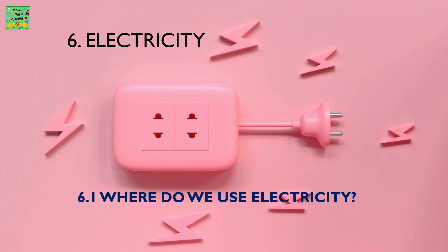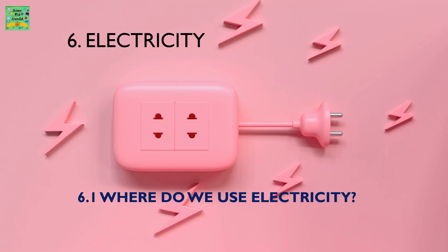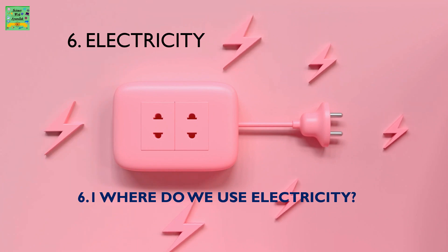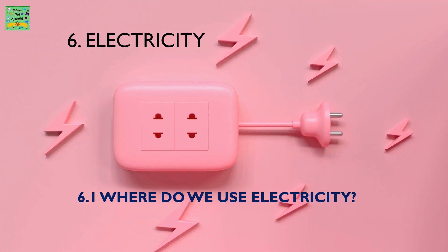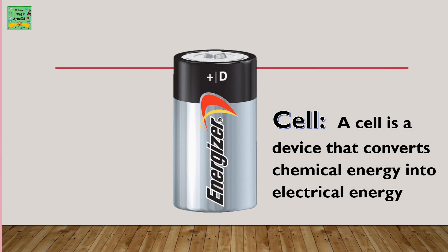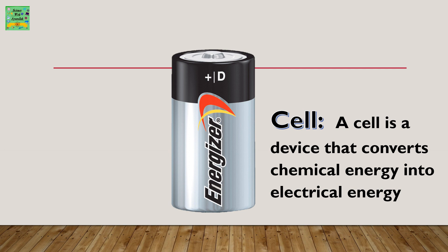Electricity 6.1: Where do we use electricity? Vocabulary: Cell. A cell is a type of device that converts chemical energy into electrical energy.